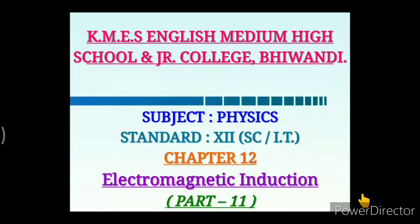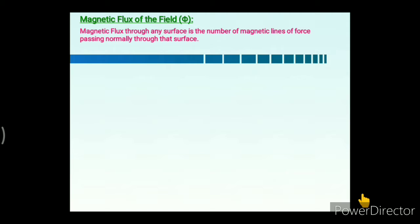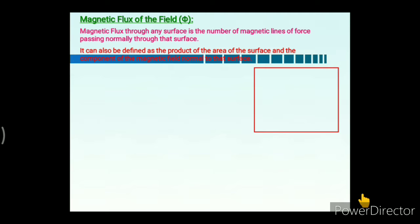Hello students, let's have a quick revision of Chapter 12: Electromagnetic Induction, then we will proceed further for the last topic. The very first concept we had seen is magnetic flux. The magnetic flux through any surface is the number of magnetic lines of force passing normally through that surface, and it is also defined as the product of the area of the surface and the component of the magnetic field normal to that surface.